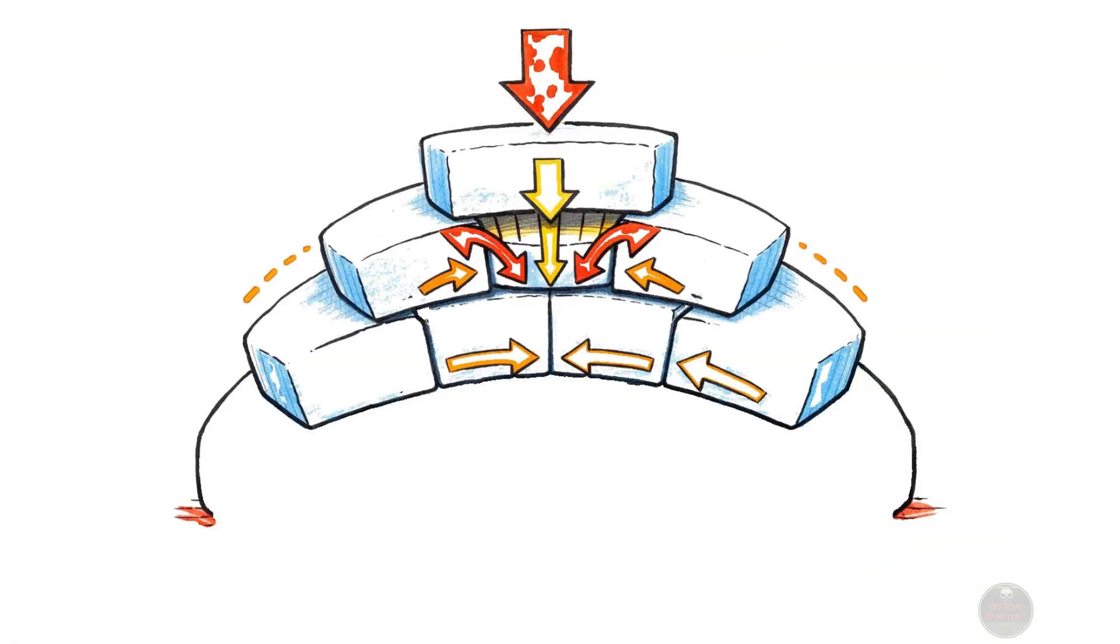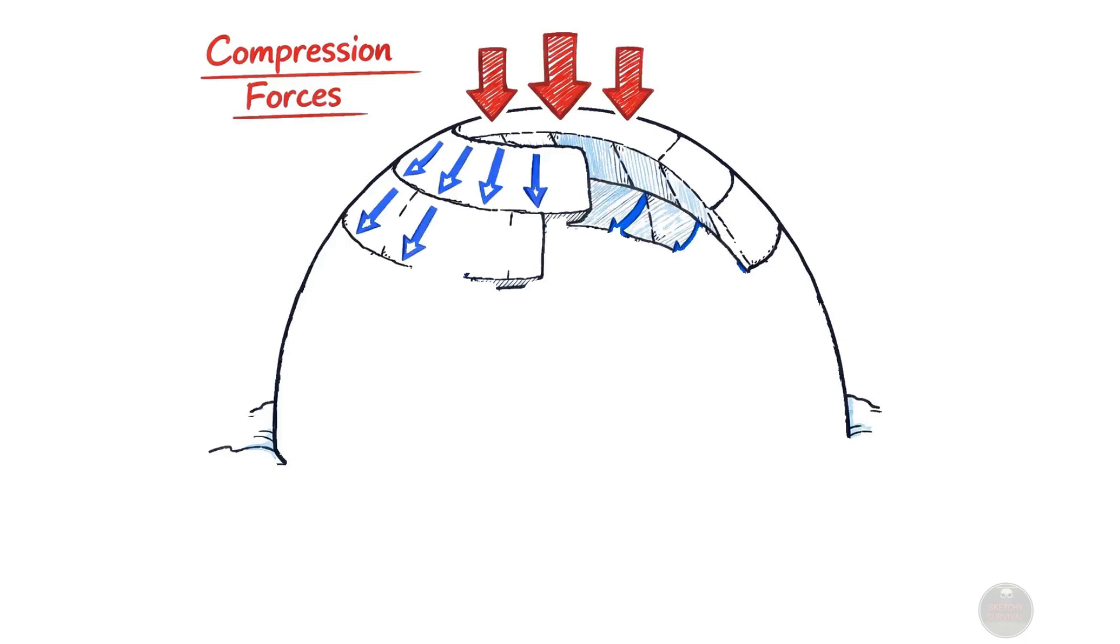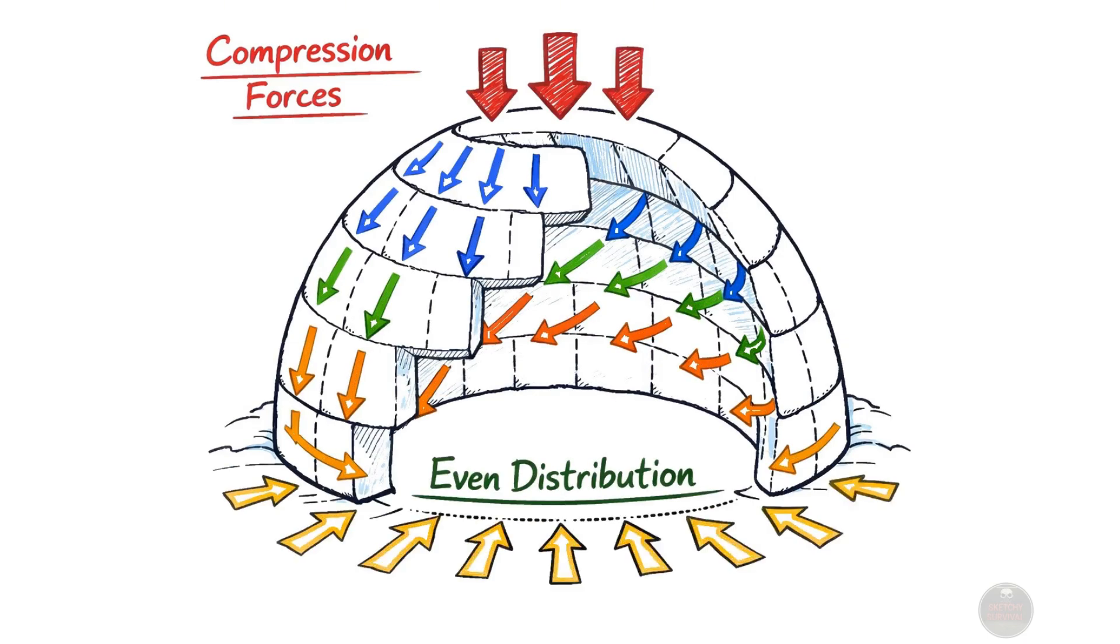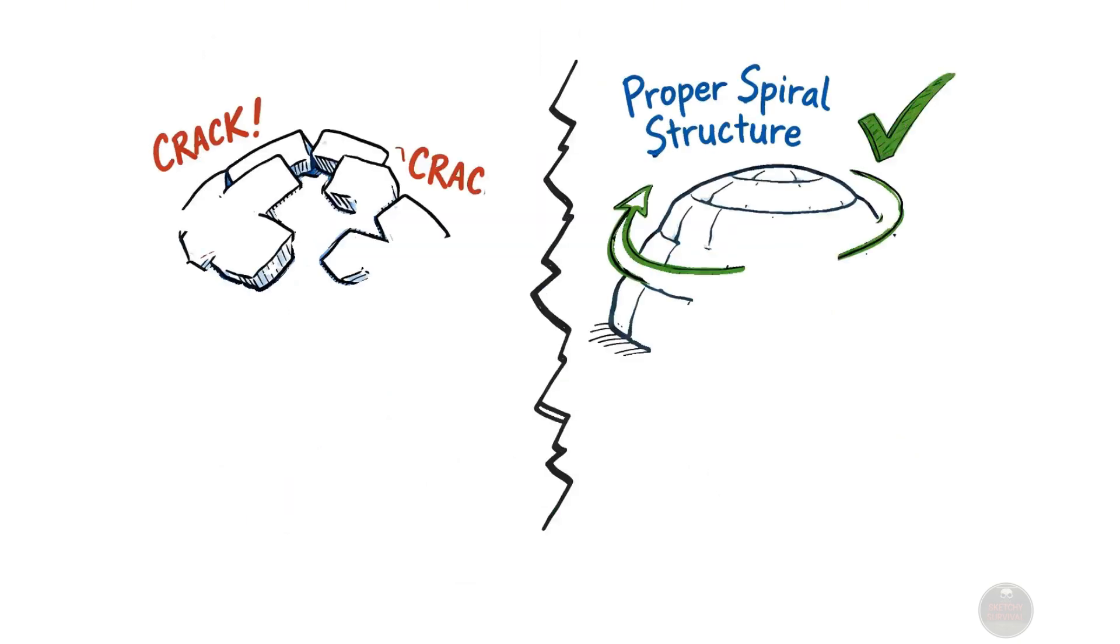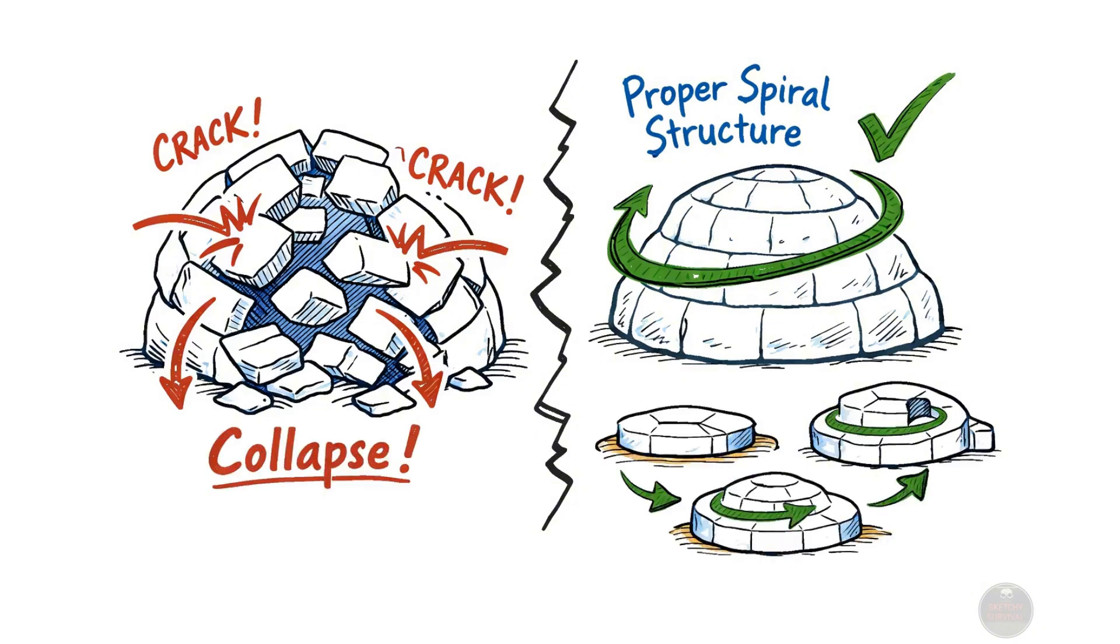Each new block rests securely on the one below it, transferring weight evenly across the entire structure. This process distributes the compressive forces throughout the entire snow dome, significantly enhancing its overall strength. Without this continuous spiral, the structure would simply crumble under its own weight, failing to achieve the necessary strength for a reliable shelter.